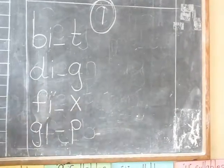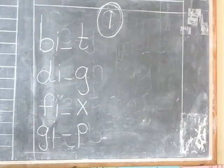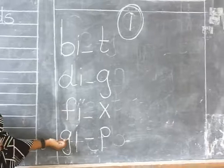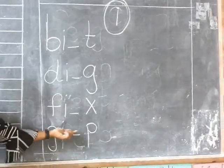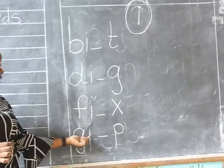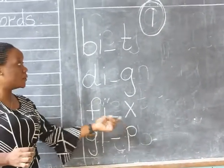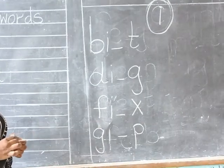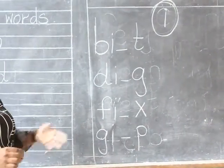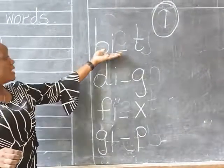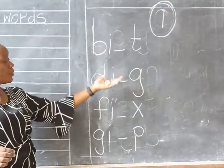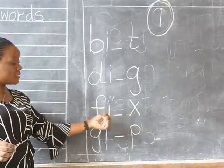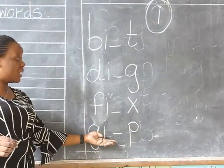I have another three-letter word: gu, i, pu — and the word will be give. Let's read the words again: bit, dig, fix, give. Remember, all these words come from vowel e.